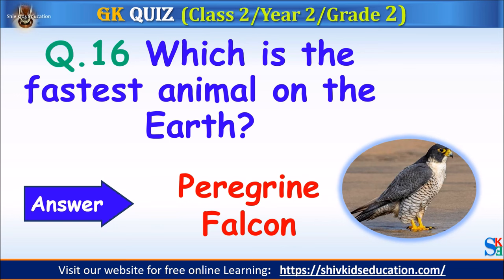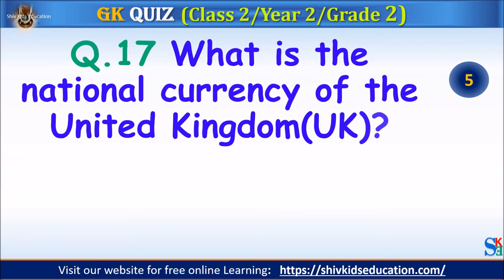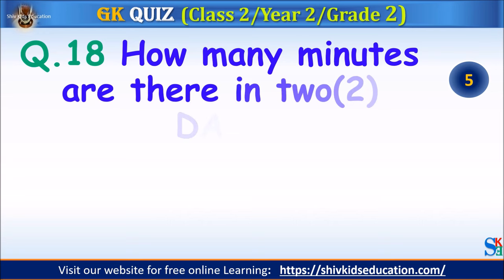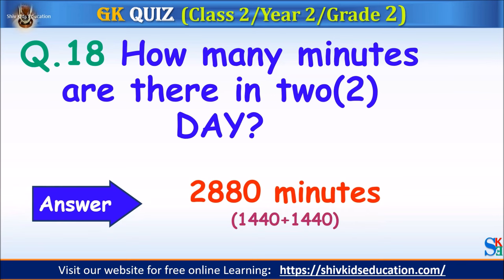Question 17: What is the national currency of the United Kingdom? Your time starts. The answer is GBP or the Great British Pound. Question 18: How many minutes are there in two days? Your time starts. The answer is 2,880 minutes.